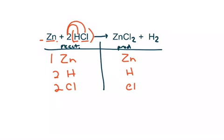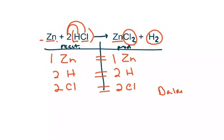And on my product side, I have a single zinc, two chlorines, and two hydrogens. If I look, I have one equals one, two hydrogens equals two hydrogens, and two chlorine equals two chlorines. So I have a balanced chemical equation here as well.